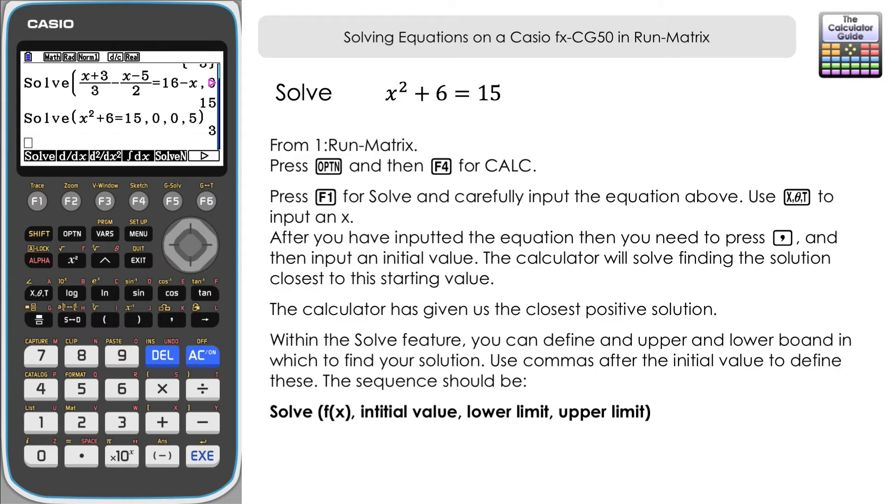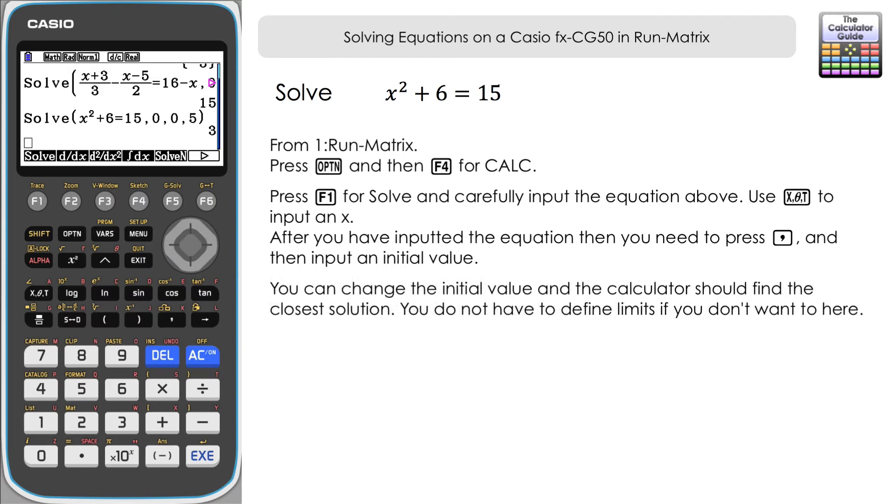Incidentally another way of finding those solutions, again just working with this same example, is choose a different initial starting value and not necessarily set the limits. See if we can find the solutions closest to those initial values. So if I delete those off and set our initial value as -2, press execute, you can see it's -3 that we've got as our closest solution to -2. Let's change that to 5. You can see we've got positive 3 as our closest solution to that. So we can have a little guess at approximately where we want our solution to be and the calculator will zoom in on the closest solution to that.